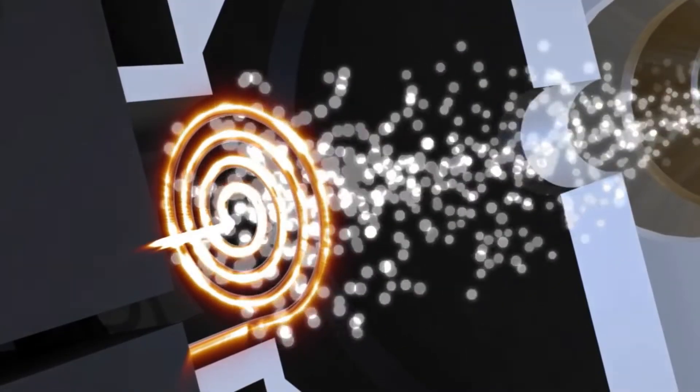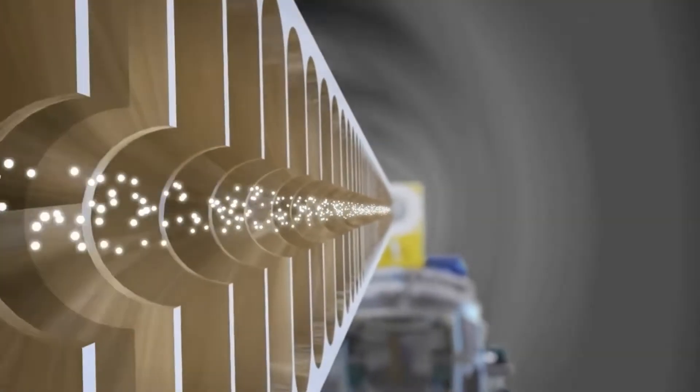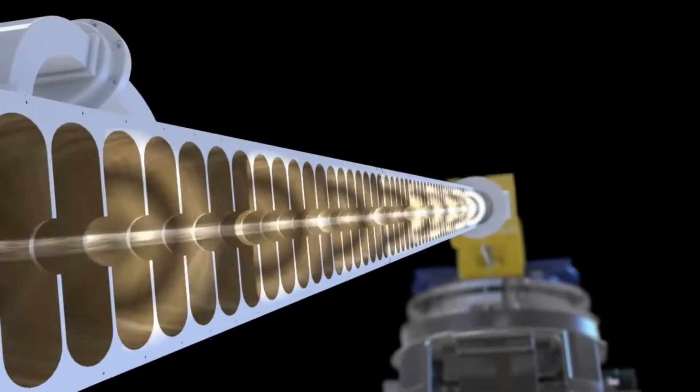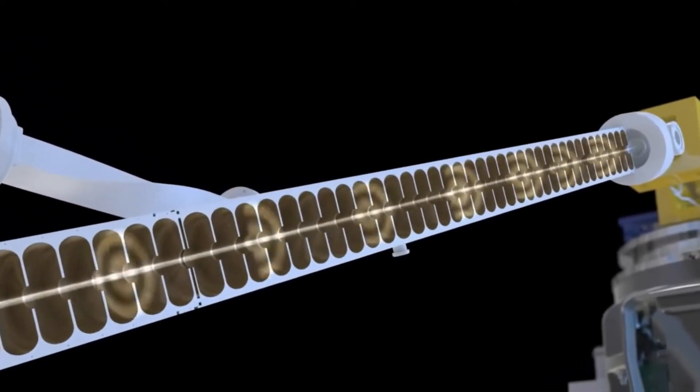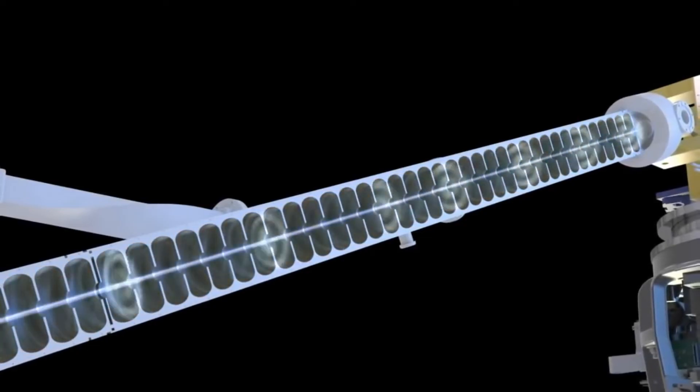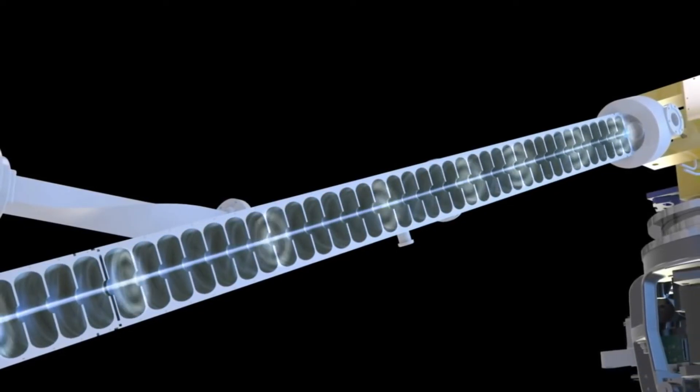The electrons are accelerated along the waveguide toward the target. The waveguide contains a series of copper cells. Small holes, or irises, between these copper cells allow the electrons to travel along the waveguide and help to focus the beam. A vacuum is created to ensure that the electron beam is not impeded by other particles.